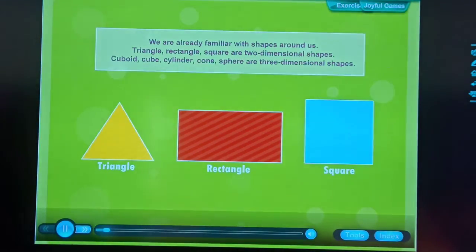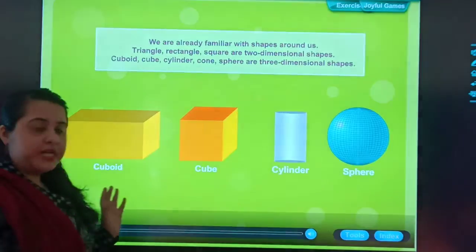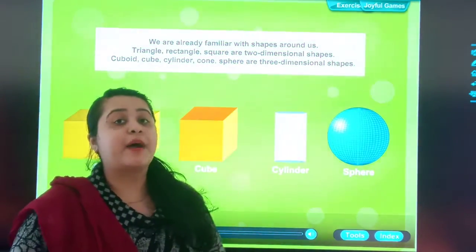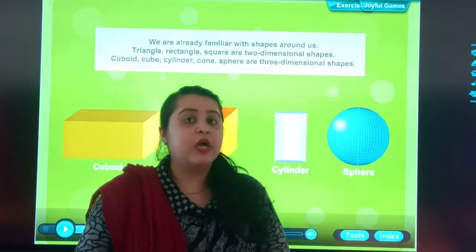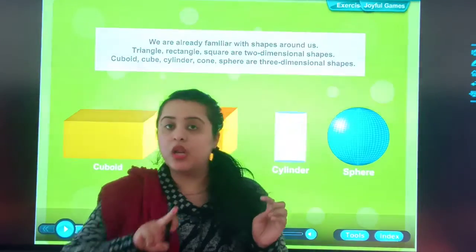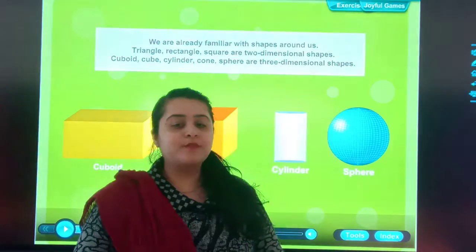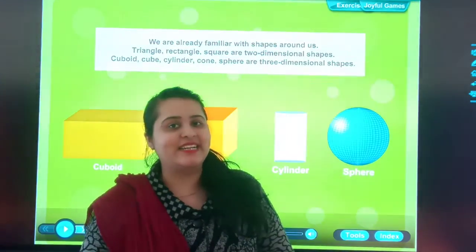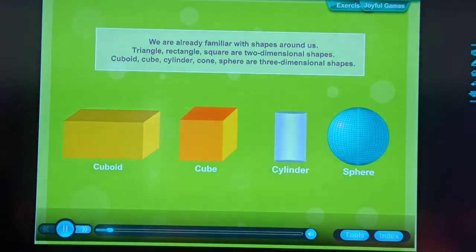Okay students, our two dimensional shapes. Cuboid, cube, cylinder and sphere are three dimensional shapes. You play with ball, right? Exactly, the ball's shape, that is known as sphere. Okay students? Now, when you see paper being rolled, that shape becomes your cylinder. Our three dimensional shapes.